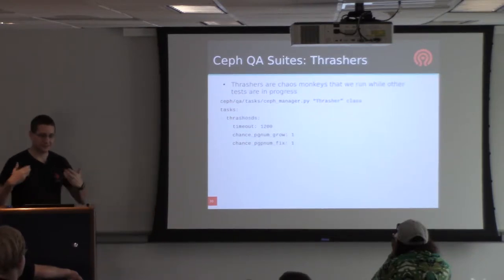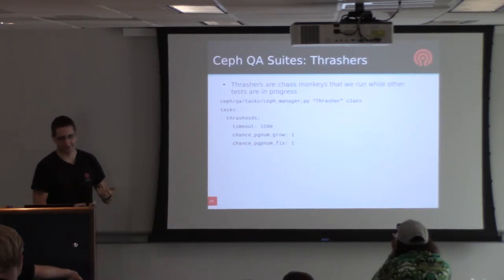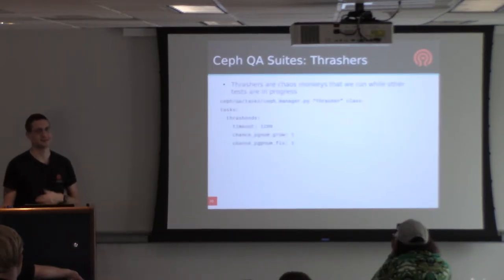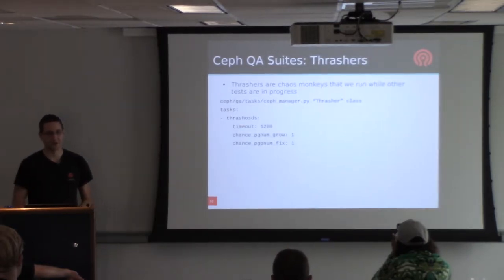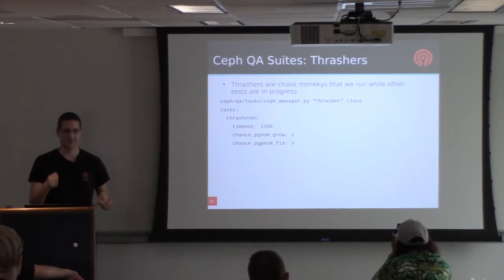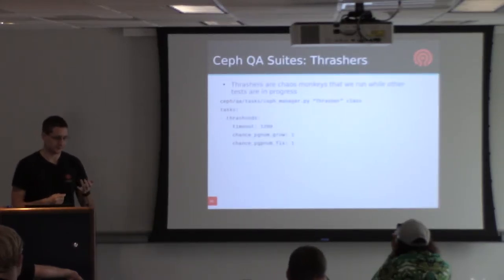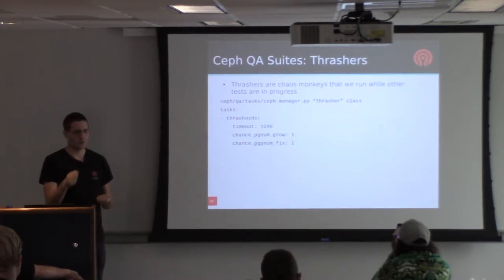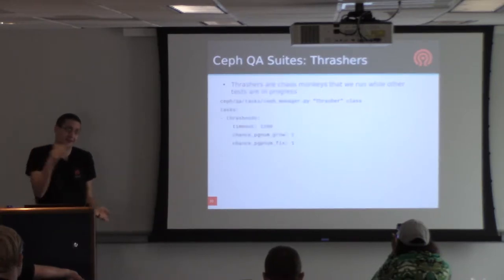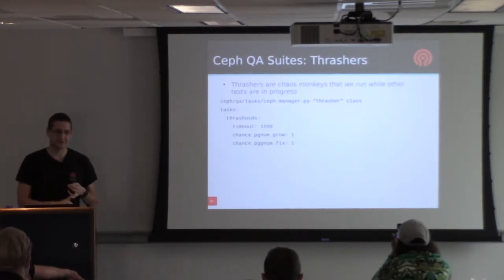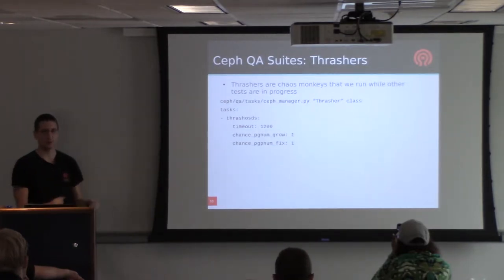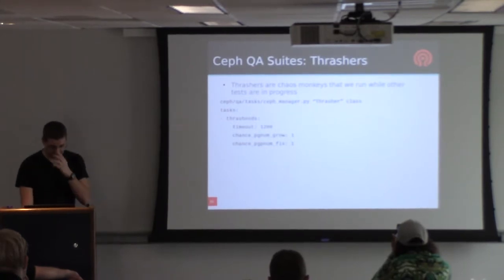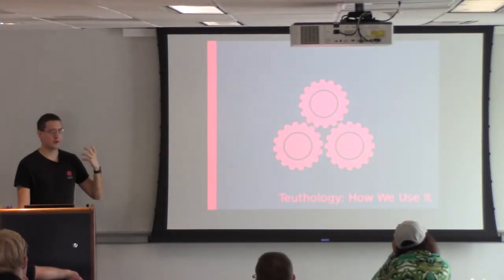The thrash directory is a very important part of testing Ceph. Ceph's purpose in life is to deal with failures, so we need to test it against failures. You may have heard of the Netflix Chaos Monkey - it's one of those things you just have to do. Thrashers run in the background and do things to the cluster. We have thrashers that turn OSDs on and off randomly - only so many at a time so the cluster should still work, or maybe enough that it doesn't. We also have thrashers that change the way data is sharded across the cluster or force a reshuffle of data while IO is still happening.